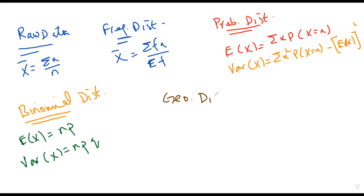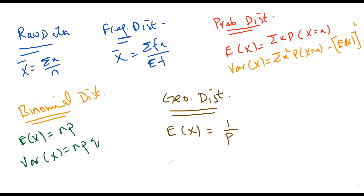When you have the geometric distribution, you need to know two things. First, E(X) is going to be 1 over p. We are not going to derive this — just remember that the expected number of trials to get the first success is 1 over p. The mode of this distribution is x equals 1.